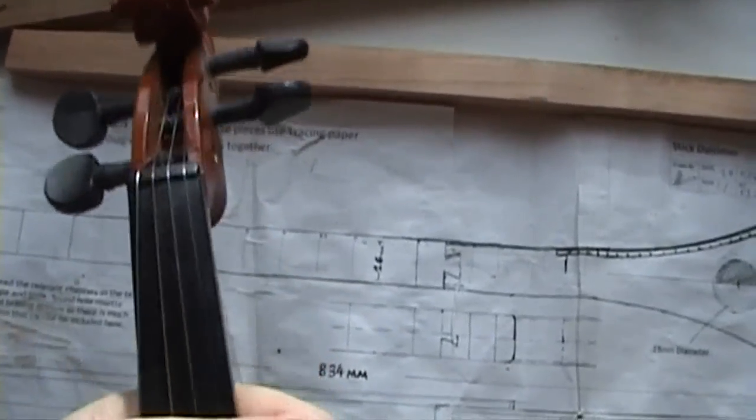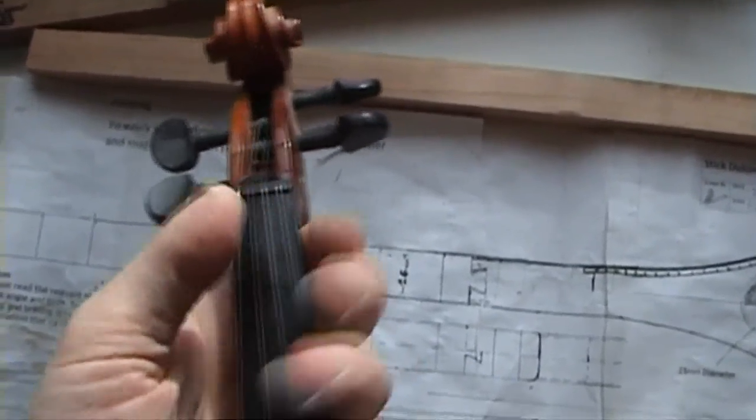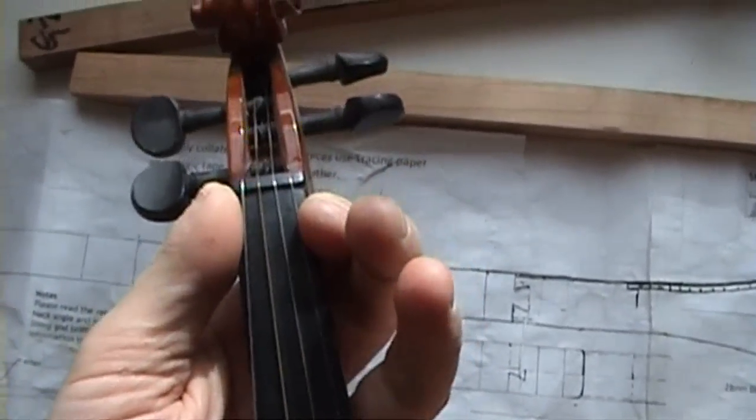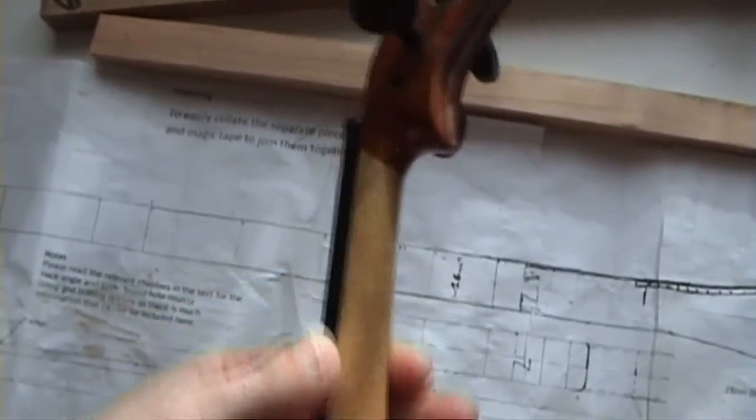You can choose the diameter depending on your playing preference. The plans allow for up to 27 millimeters wide. A fiddle is generally about 24 at the top, and if you can get hold of a fiddle, you can feel it and see which feels right to you.